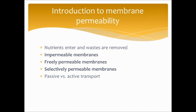We're going to talk about the plasma membrane and how things move in and out of it. There needs to be some degree of membrane permeability so nutrients can enter and waste can be removed. If cells were completely impermeable, nothing could enter or leave; if freely permeable, anything could enter and leave — which would be almost as bad. So we need a selectively permeable membrane to allow certain things in and out, keeping out toxins, viruses, and bacteria. This is broadly broken into passive and active transport; passive does not require energy, active does.